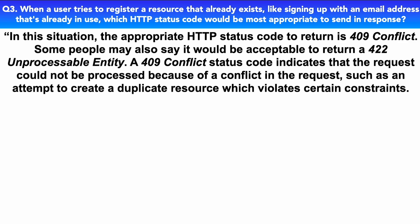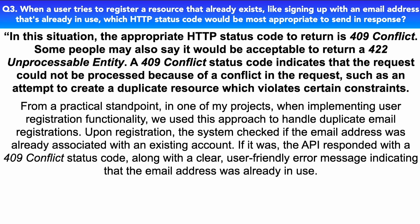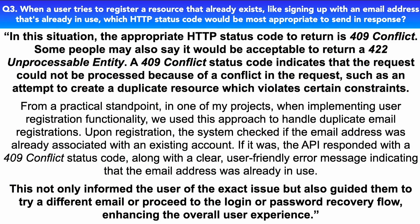Some people may also say it would be acceptable to return a 422 Unprocessable Entity. A 409 Conflict status code indicates that the request could not be processed because of a conflict in the request, such as an attempt to create a duplicate resource, which violates certain constraints. From a practical standpoint, in one of my projects, when implementing user registration functionality, we used this approach to handle duplicate email registrations. Upon registration, the system checked if the email address was already associated with an existing account. If it was, the API responded with a 409 Conflict status code, along with a clear, user-friendly error message indicating that the email address was already in use. This not only informed the user of the exact issue, but also guided them to try a different email or proceed to the login or password recovery flow, enhancing the overall user experience.